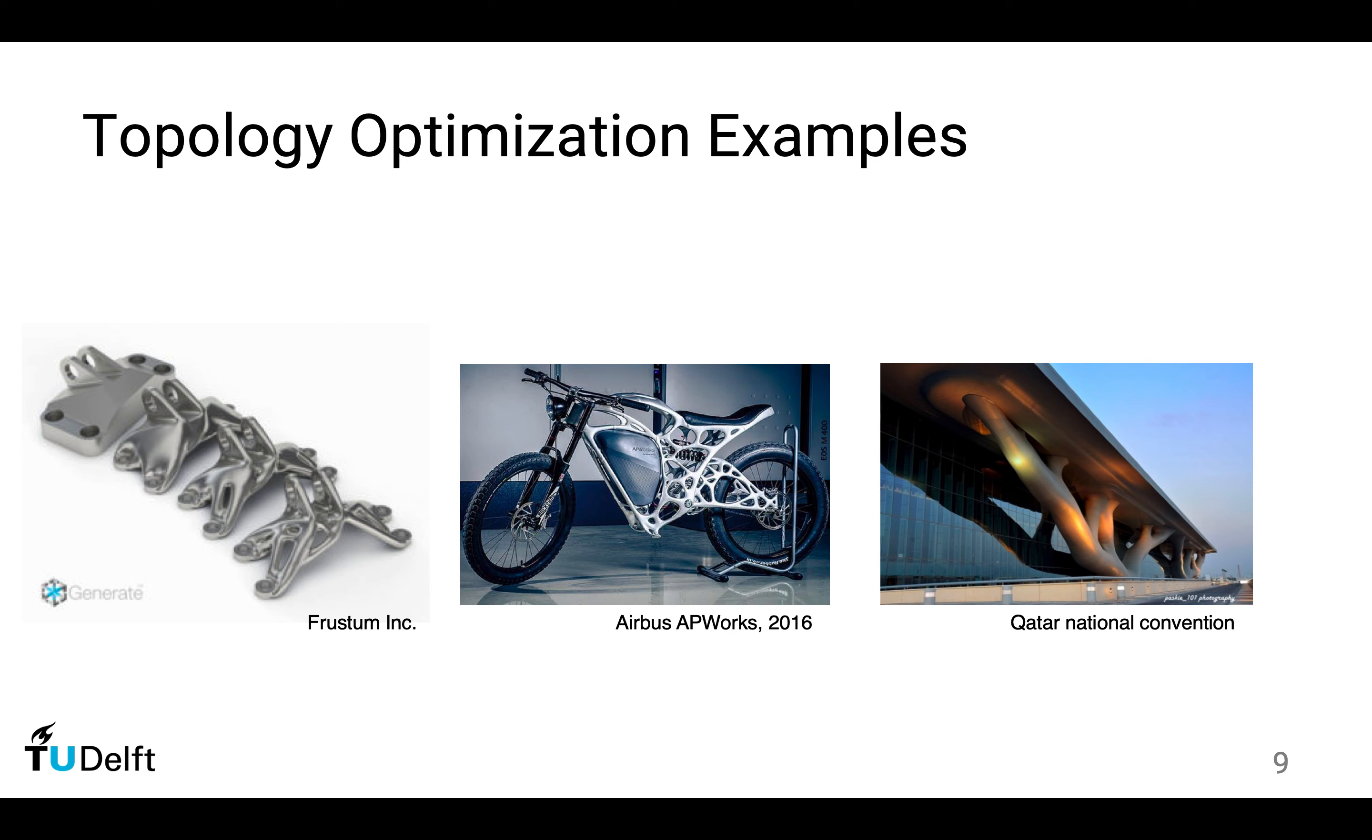The chair is just one of the examples of topology optimization. Topology optimization is most relevant for aerospace and automotive industry, where people strive to reduce the weight of mechanical parts.